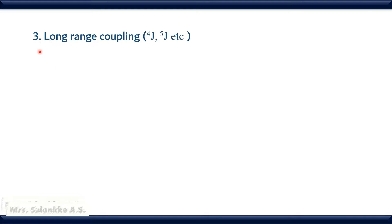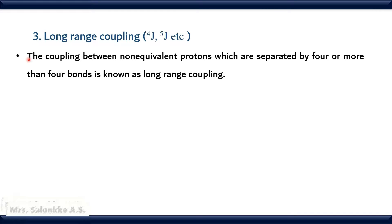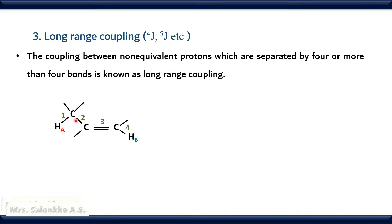The third type is long-range coupling. The coupling between non-equivalent protons which are separated by four or more than four bonds is known as long-range coupling. In that case, HA and HB are the non-equivalent protons separated by four bonds, and in between them there is a pi bond. Long-range coupling is generally seen in case of unsaturated compounds. When a pi bond is in between the intervening bonds, then such type of coupling is possible.